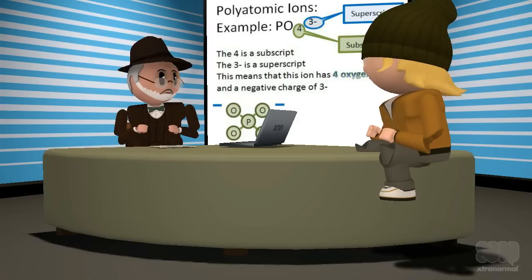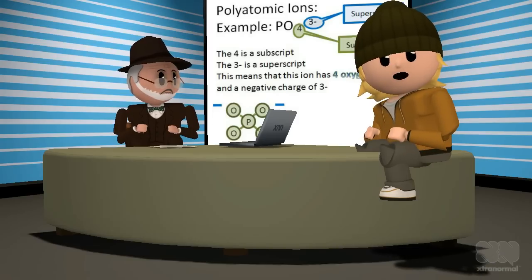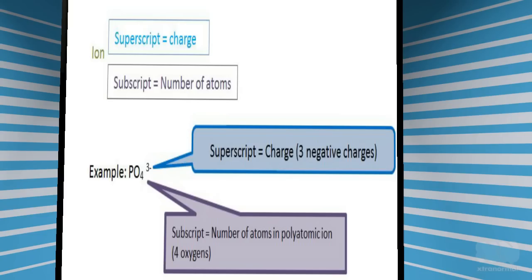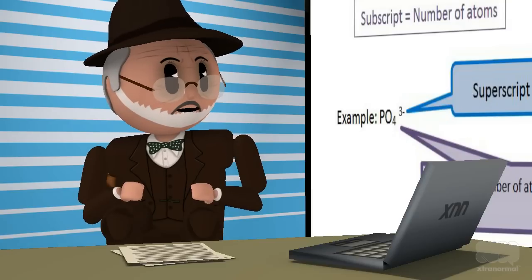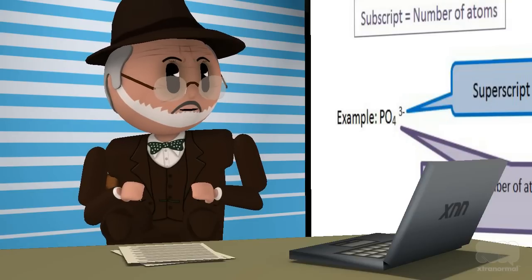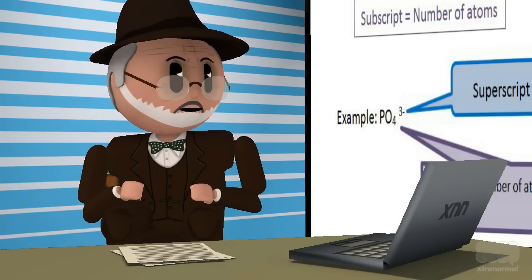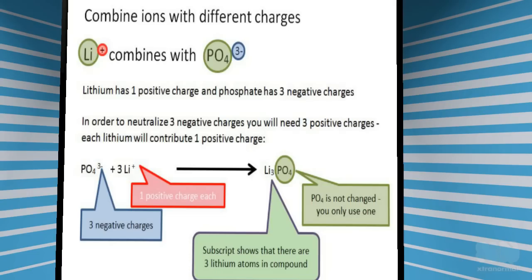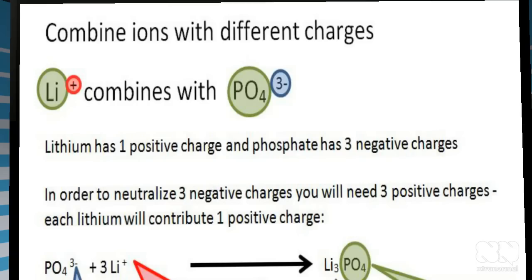Okay, I now know how to read the charges on an ion. You have to look at the superscript to figure out the number of charges on the ion. The phosphate ion has three negative charges. Yes, now let's look at how the ions combine. We will use the example of lithium ions combining with a phosphate ion. We will look at this more closely. Lithium has one positive charge and the phosphate ion has three negative charges.